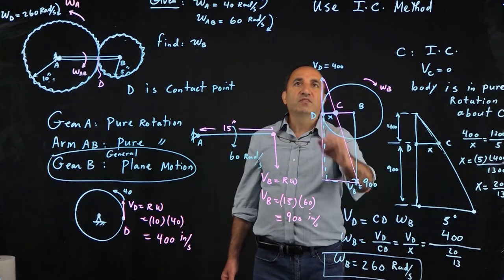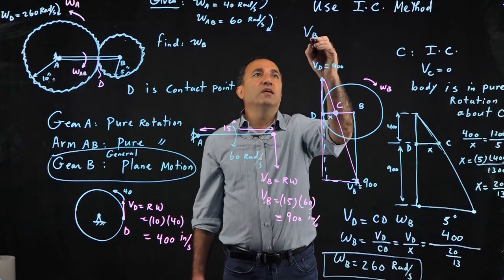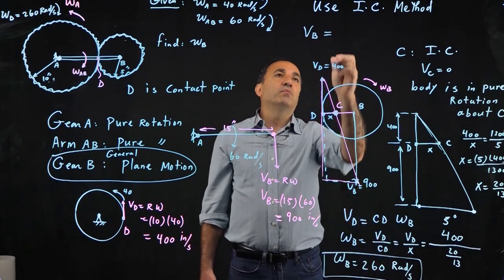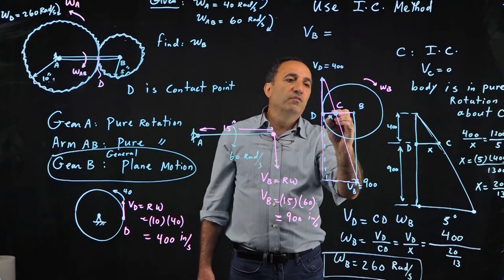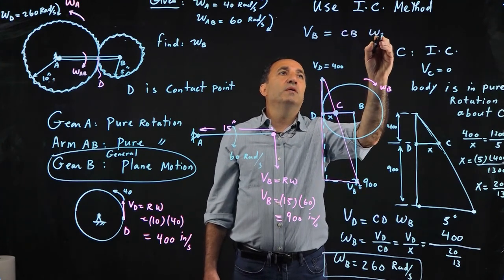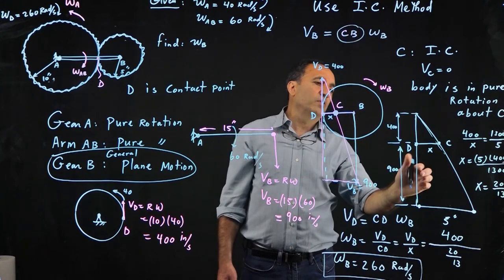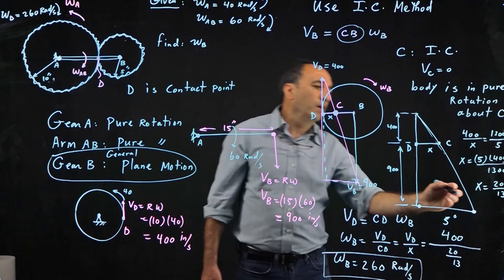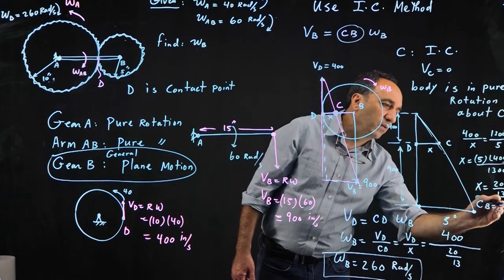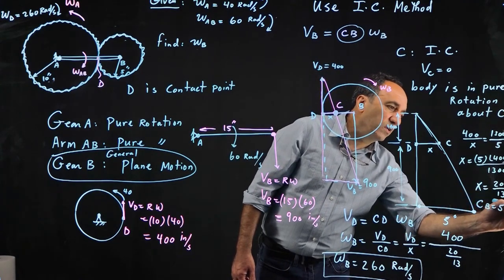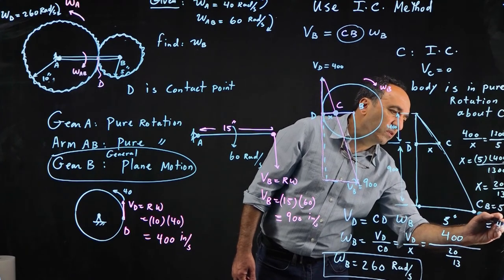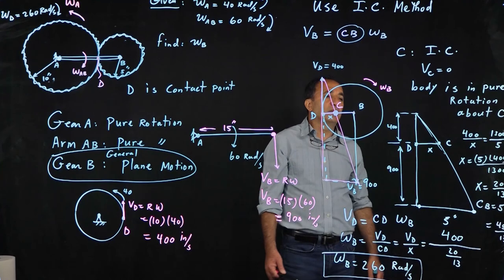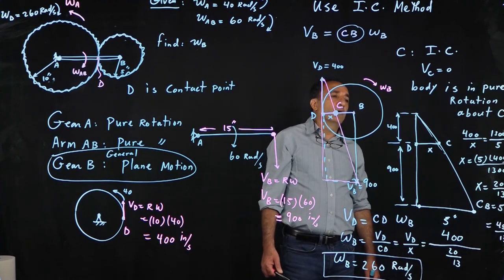By the way, we could have used velocity of B to get the same answer by saying velocity of B is R from C to B times omega of B. But then you'd have to calculate CB. CB would be 5 inches minus 20 over 13, which is 45 over 13. But it doesn't matter, you will get the same result.